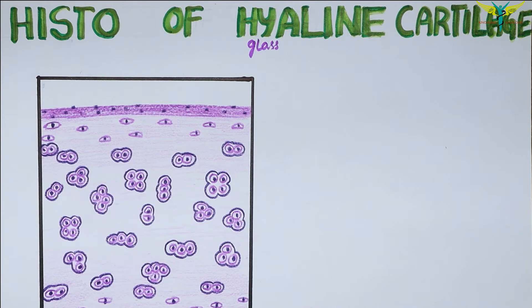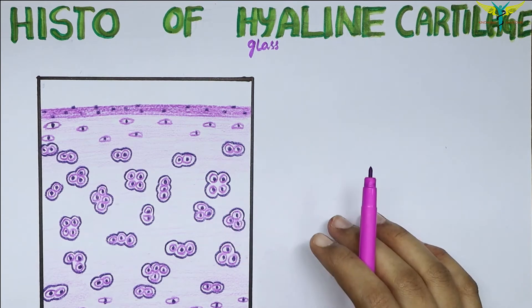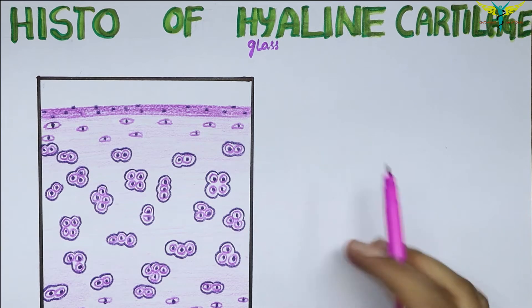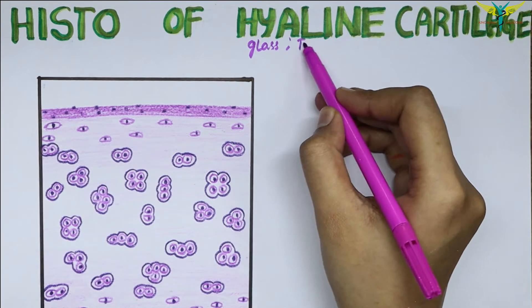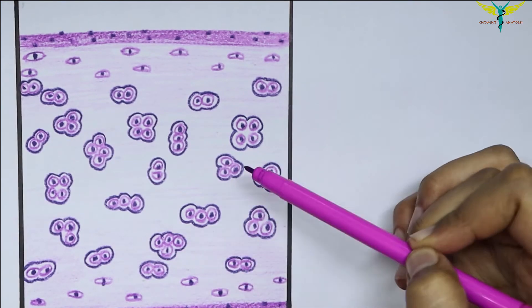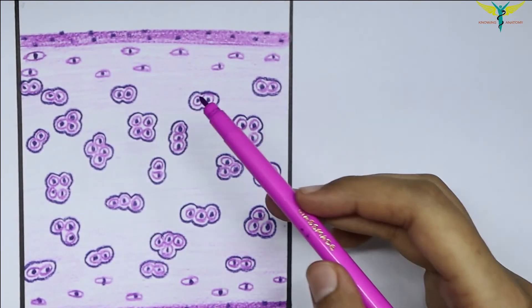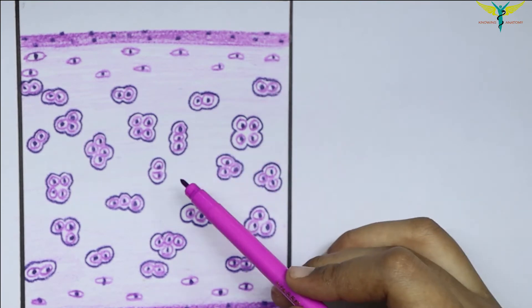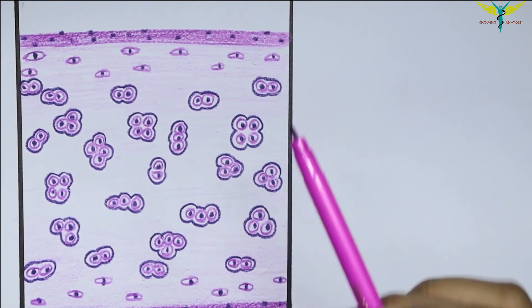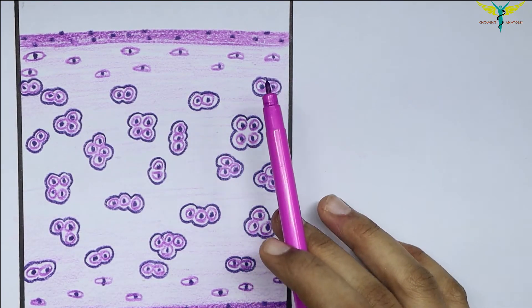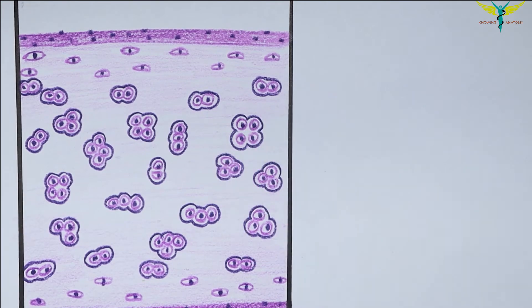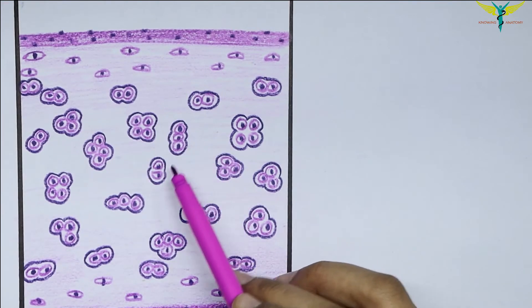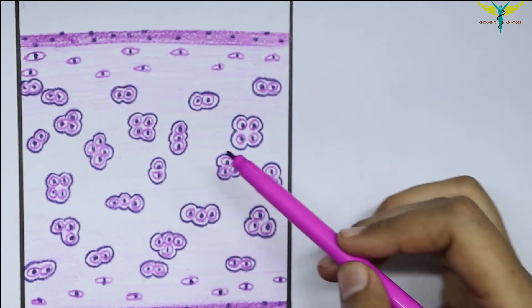These collagen fibers are arranged to resist the tensional forces, and the hyaline cartilage has been compared to a tire. Towards the center of the mass of the hyaline cartilage, the chondrocytes are large and are usually present in groups of two or more. These groups are formed by division of the single parent cell, and these cells tend to remain together because the dense matrix prevents their separation.